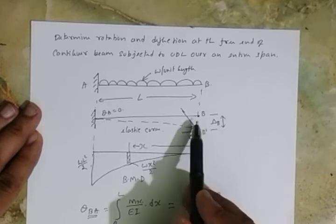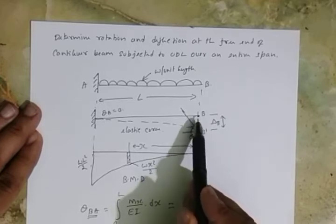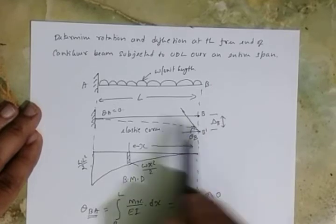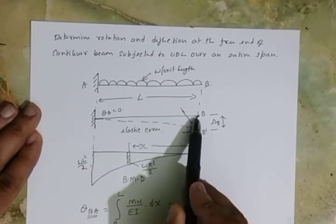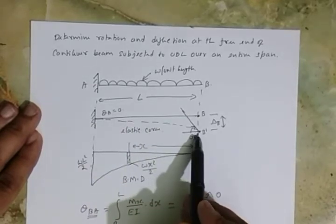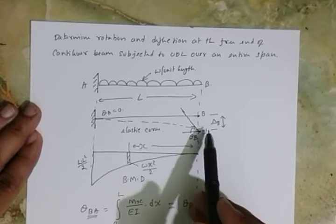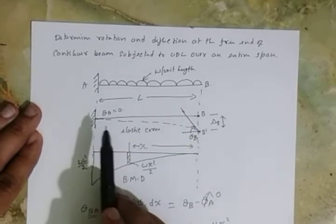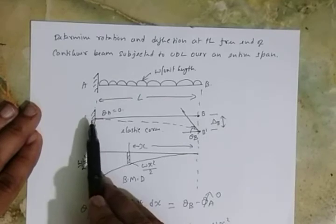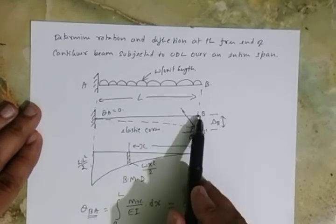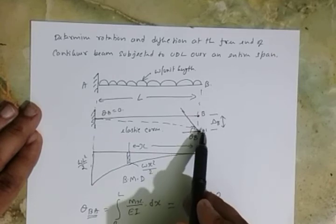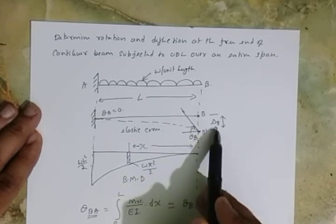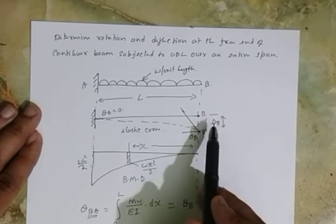So delta B is equal to the moment of the M/EI diagram between A and B, taken about the point where the deflection is required. To repeat: deflection at B equals the moment of the M/EI diagram between A and B about point B. So we need to take the moment about B.